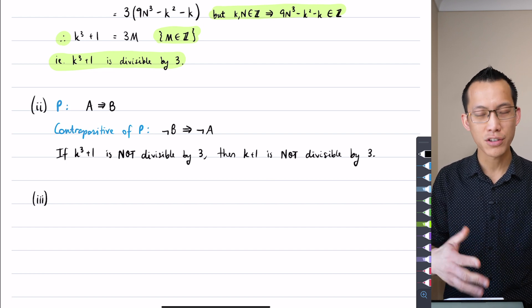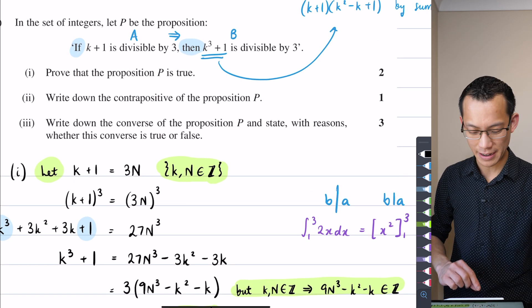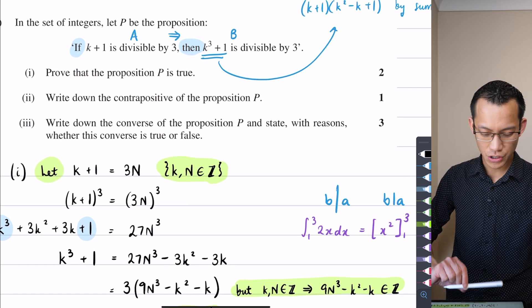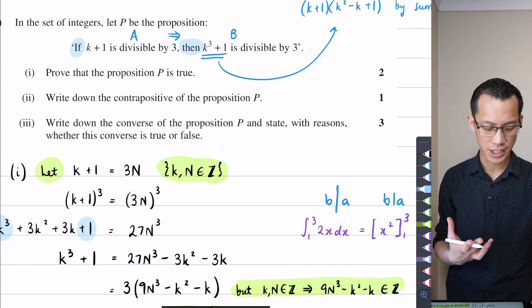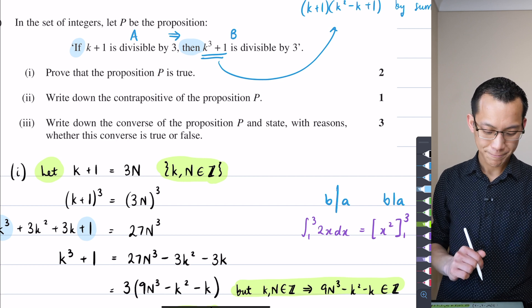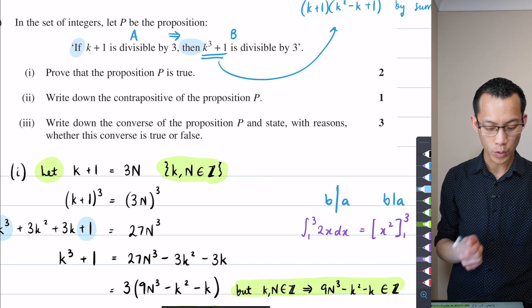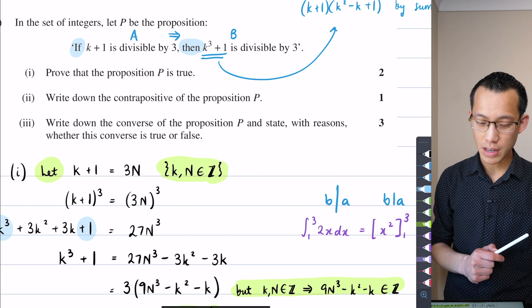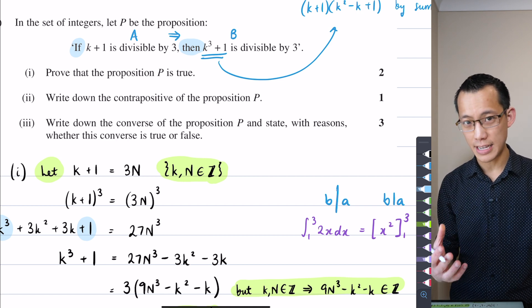You're welcome to start writing a solution, but what I want to emphasize is this is not about how you're actually going to present your solution. I want you to think through how to actually structure the solution. Let me give you one more clue. Part three says 'write down the converse of the proposition P and state with reasons whether this converse is true or false.'